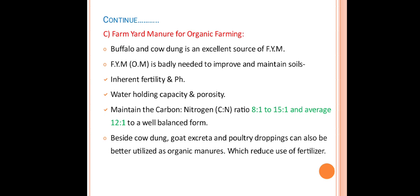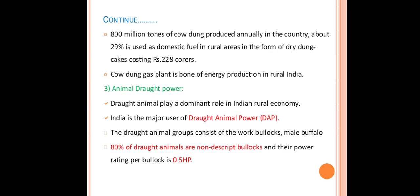FYM also helps maintain the carbon-to-nitrogen (C:N) ratio, starting from 8.8:1 to 15:1, with an average C:N ratio of 12:1 for a well-balanced farm. Likewise, FYM helps in maintaining the soil fertility of the farm. Besides cow dung, goat excreta and poultry droppings can also be better utilized as organic manure, which reduces the use of chemical fertilizers.